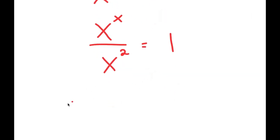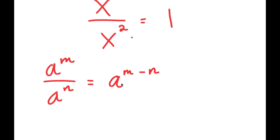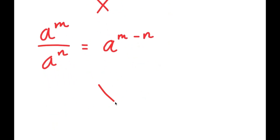Now, from here, if I have something in the form a to the power of m over a to the power of n, this is equal to a to the power of m minus n. So x to the power of x over x to the power of 2 is going to equal x to the power of x minus 2, which is equal to 1.